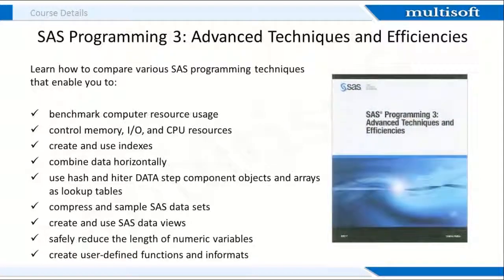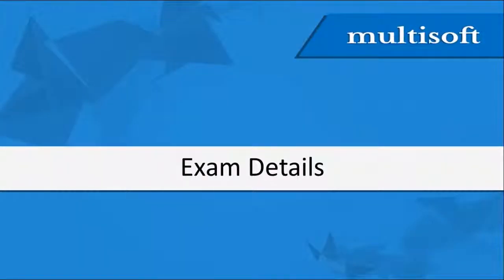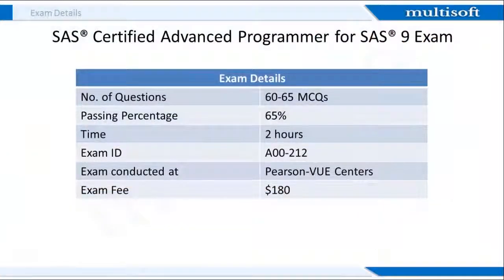With the advanced techniques book, you gain many skills including benchmarking computer resource usage, controlling memory and CPU resources, creating and using indexes, and combining data horizontally. Moving on to the exam details: the advanced SAS exam has a duration of two hours, where you need to attempt approximately 60 to 65 multiple choice questions. The passing percentage is 65% and the exam ID is A00-212. The exam is conducted at Pearson VUE centres and you need to pay a fee of $180. To appear for the SAS Advanced exam, candidates need to achieve the base SAS certification first.